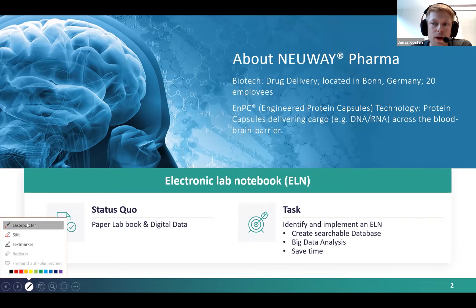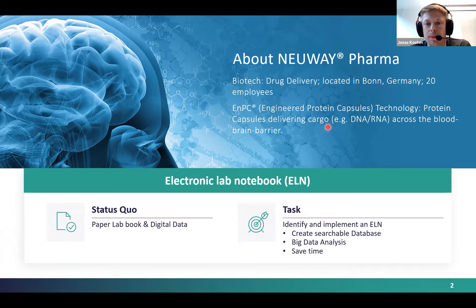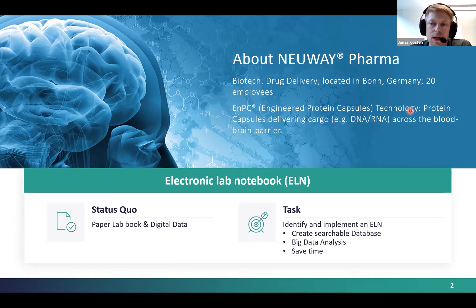We're located in Bonn, Germany, and have around 20 employees currently. Our core technology is engineered protein capsules, or NPCs, which are protein capsules that can be used to package any kind of cargo — for instance DNA or RNA — and deliver this cargo across the blood-brain barrier. We do nearly all of the production, analytics, and R&D in-house.